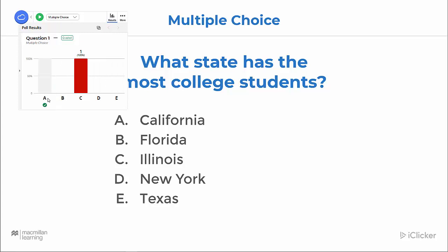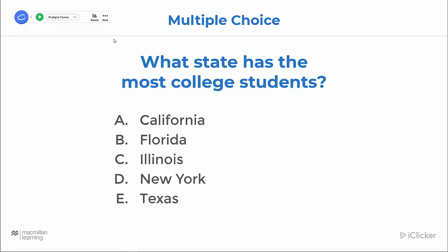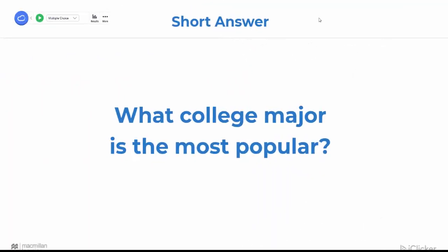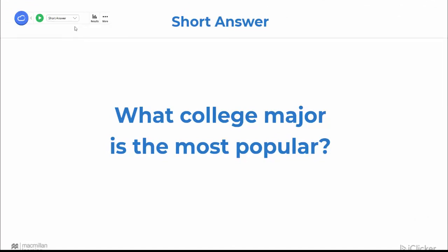You can have more than one correct answer if the question demands it. Let's try another question type — this is a short answer question. To ask this question, I simply go to the drop-down menu, select short answer, and then hit the play button. My students are sent this screenshot, and now I can see how many responses I have and how much time has passed.